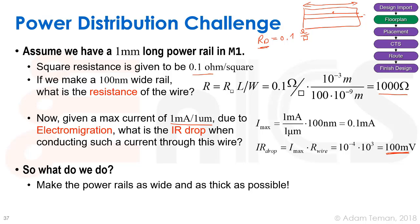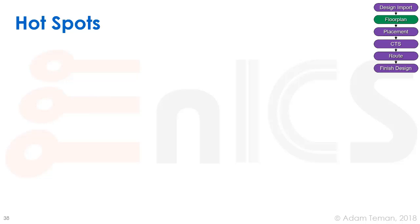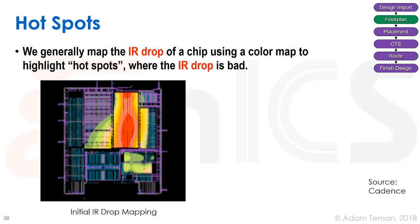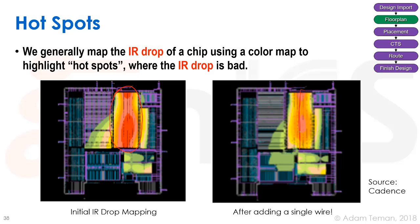The solution is to make power rails as wide and thick as possible to reduce resistance. To analyze IR drop, we create a temperature-map (heat map) of the IR drop across the chip, highlighting hot spots. For example, a Cadence CDN live demo shows a chip with one bad red hot spot. After adding just one additional metal stripe, the IR drop improved dramatically — that's the power of IR drop analysis tools.